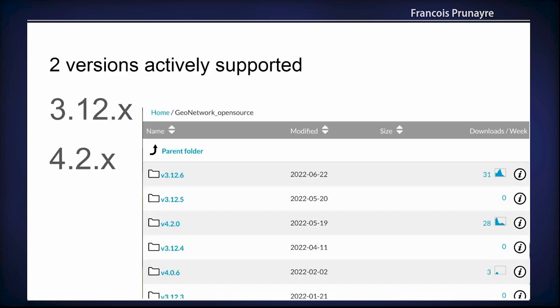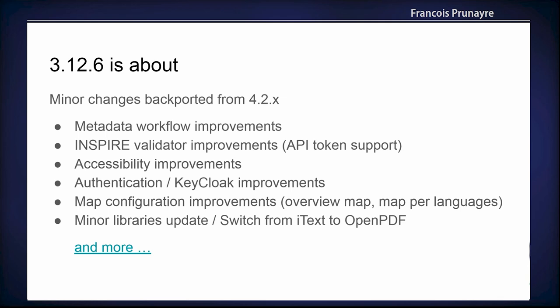Currently GeoNetwork is mainly working on two actively supported versions. In 2022 we have been making regular releases of version 3.12 almost every one to two months, which is a version mainly maintained by the GeoCat team. We are also making releases of GeoNetwork 4, the last being 4.2.0 made in May. Version 3.12.6 is mainly improving application quality, testing the metadata workflow in more detail — a new feature in version 3 — and adapting the application to the INSPIRE validator changes, which is more relevant for European users.